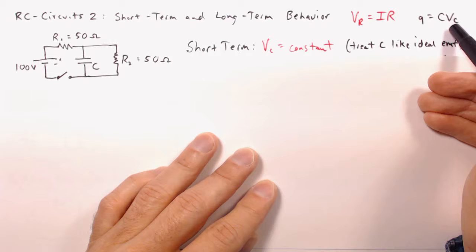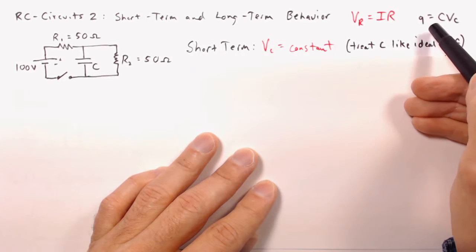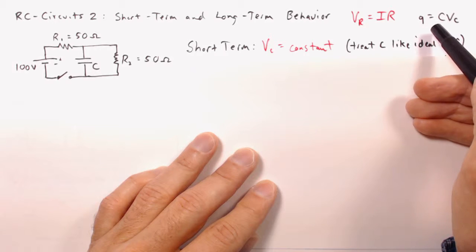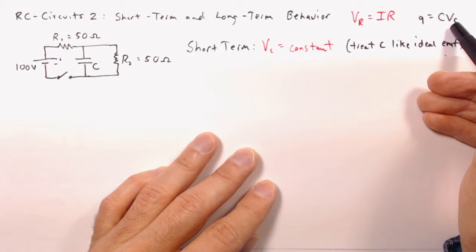So you can imagine if a millisecond is too long, you can just shrink that to a thousandth of a millisecond. You can get yourself a situation where the charge and the voltage on the capacitor are effectively constant.